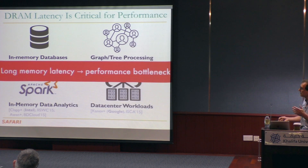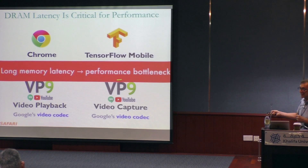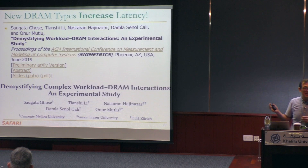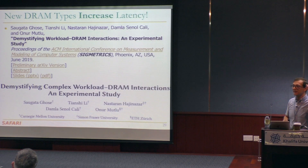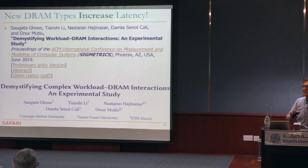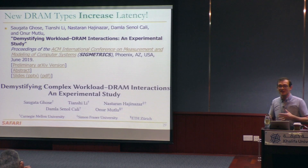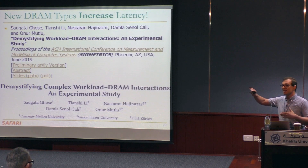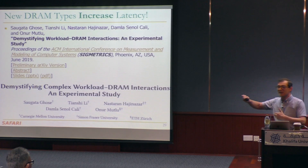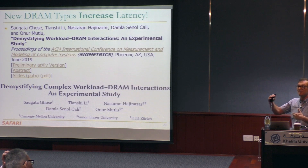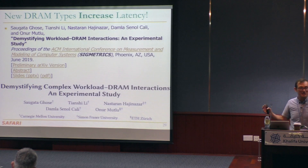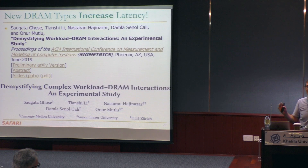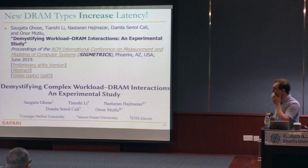Long memory latency in these applications leads to a performance bottleneck. New DRAM types actually increase latency. We published a study at SIGMETRICS this year where we examined nine different DRAM types that are state-of-the-art, with more than 100 different workloads. Some of the new DRAM technologies make the trade-off of increasing memory latency for getting higher bandwidth. Many applications cannot take advantage of the higher bandwidth but are affected by the latency, so you actually lose performance in some applications because latency increases.